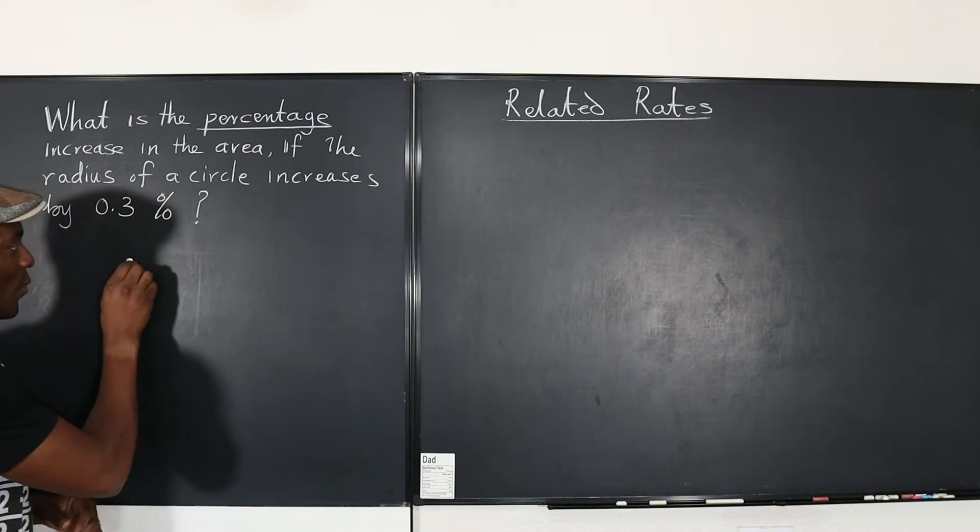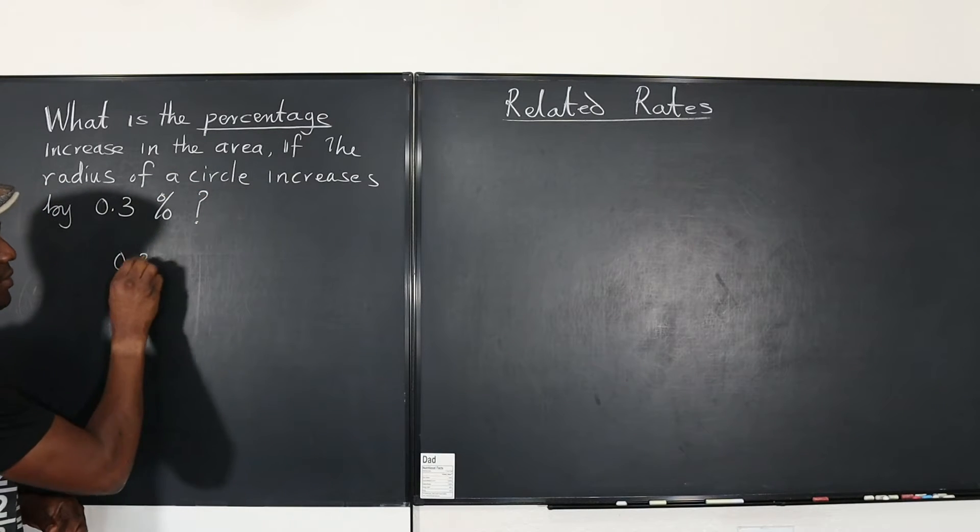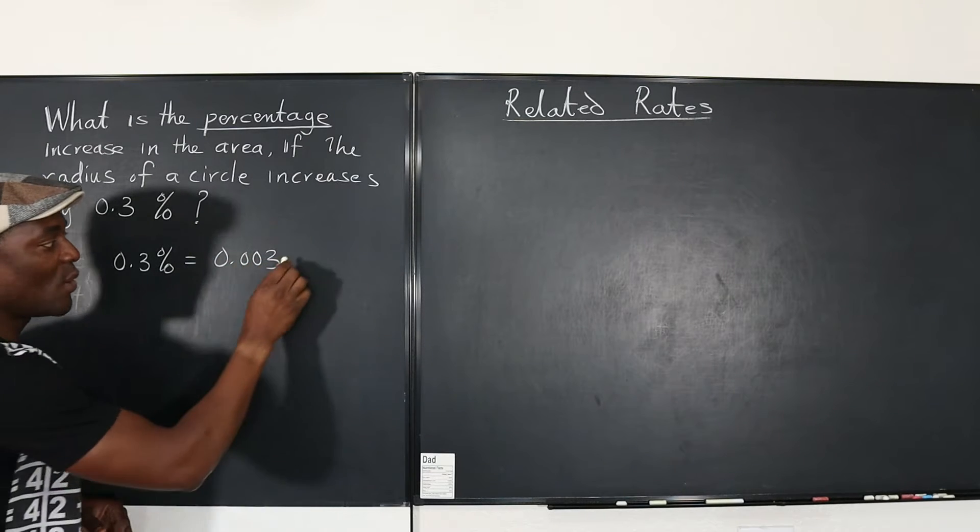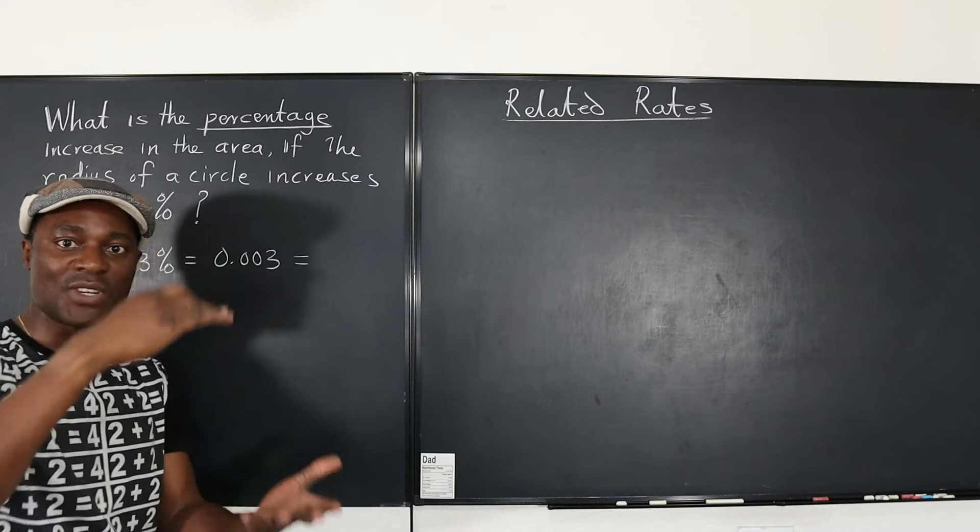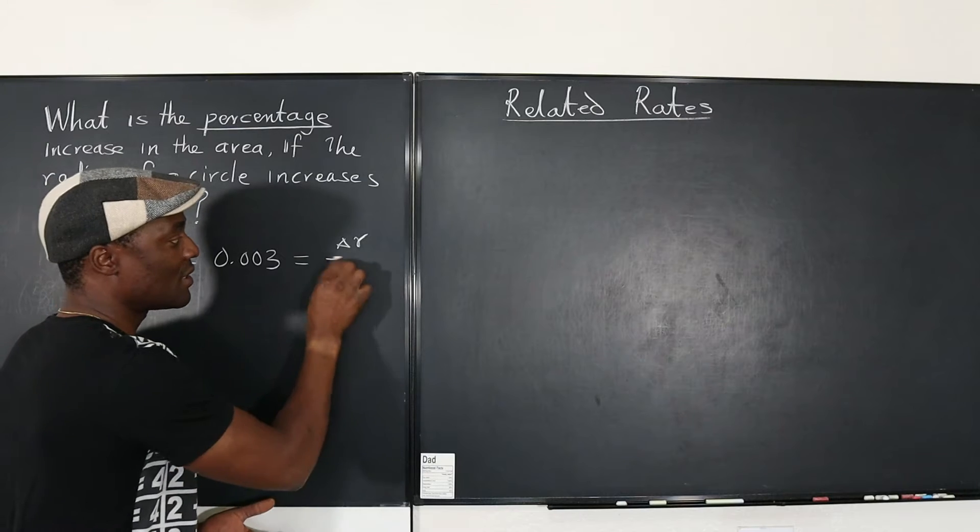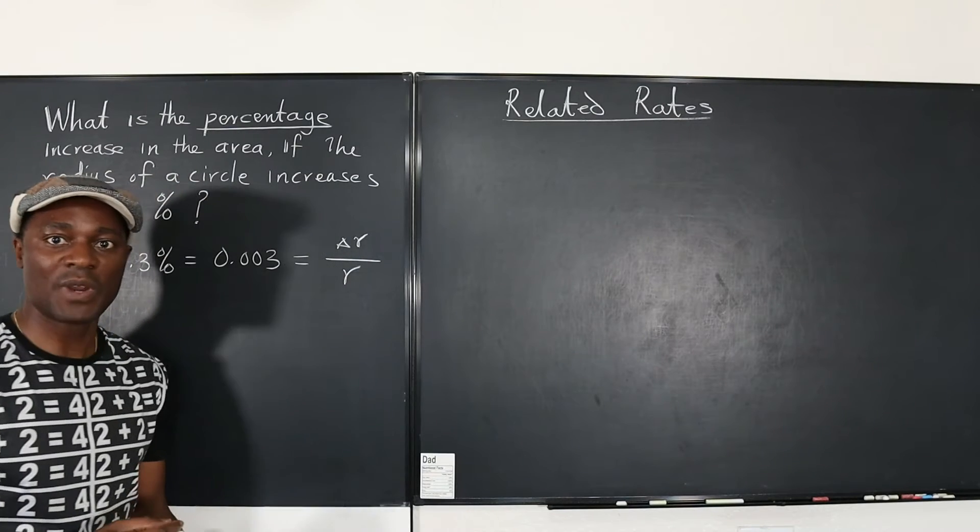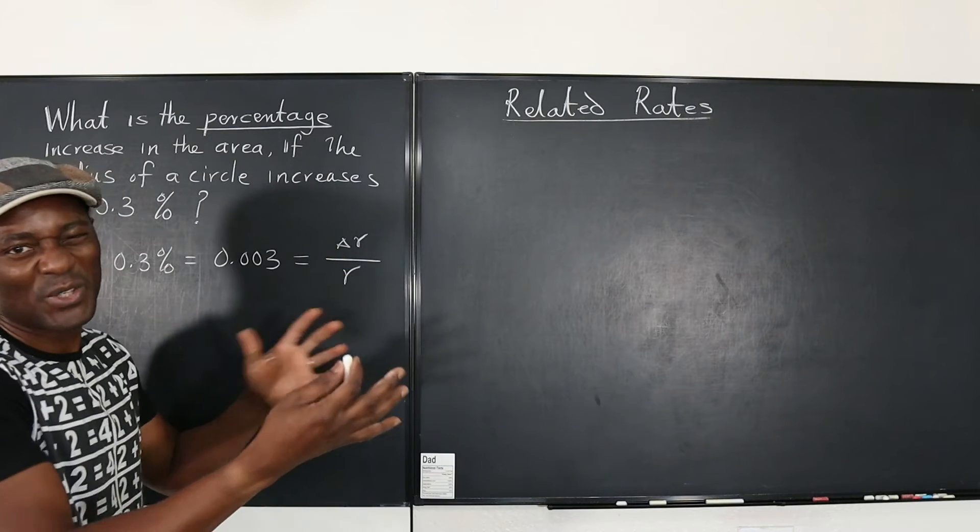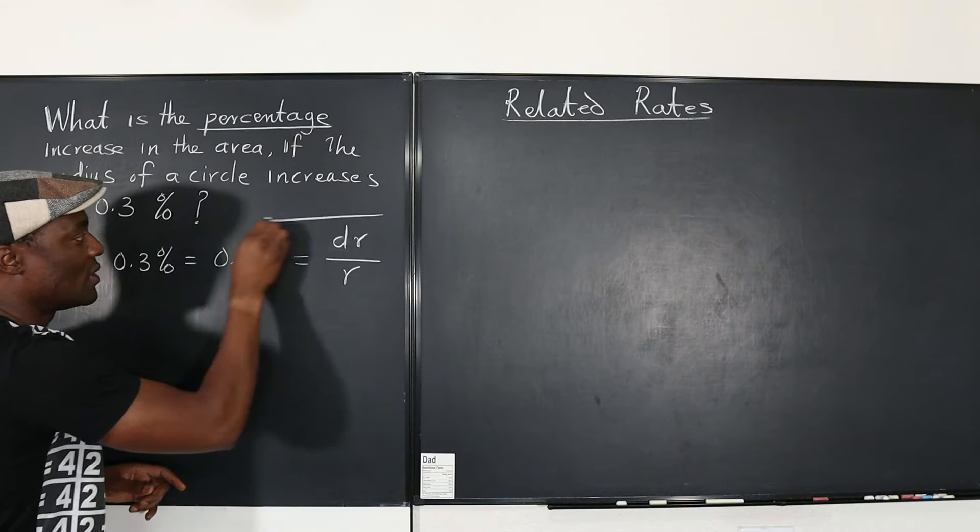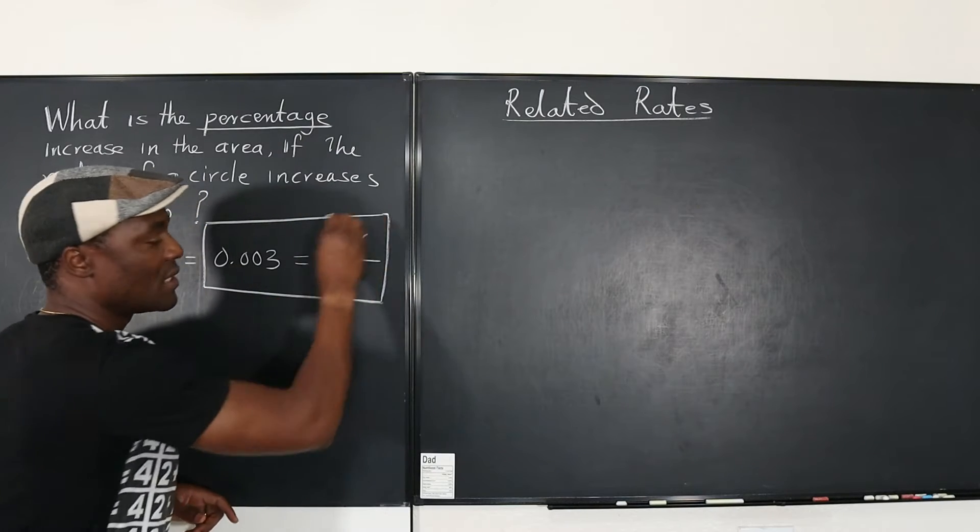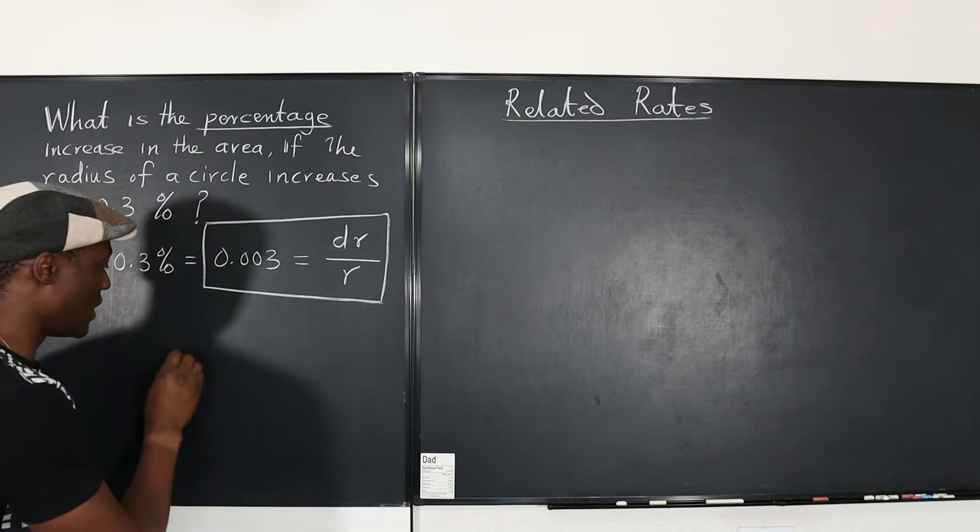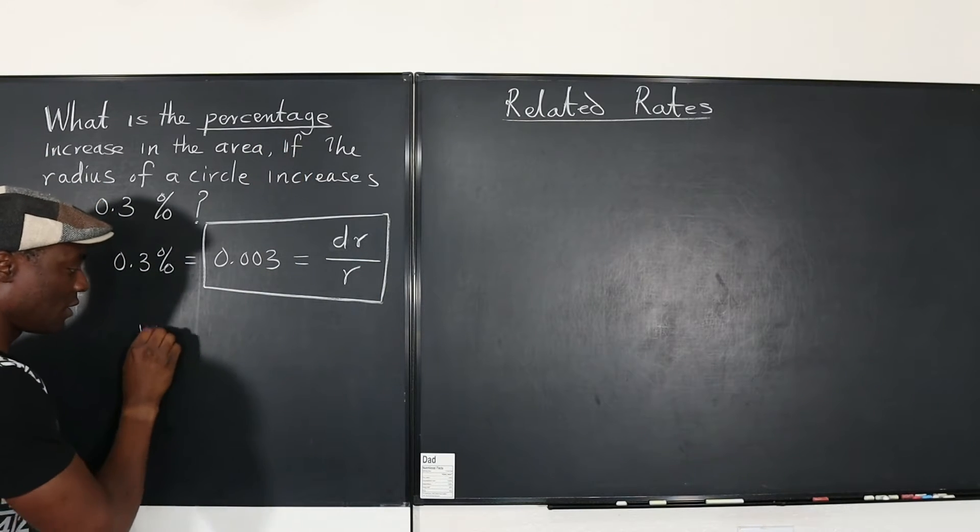Let's clean this up. We know that the 0.3 percent is the same thing as 0.003, which is simply the fraction expression of the change in the radius compared to the original radius. But we don't use this symbol when we do differentiation; we just say dr over r. This is important for you to understand. And the question is asking us to find the percentage increase, so we want to find dA over A.